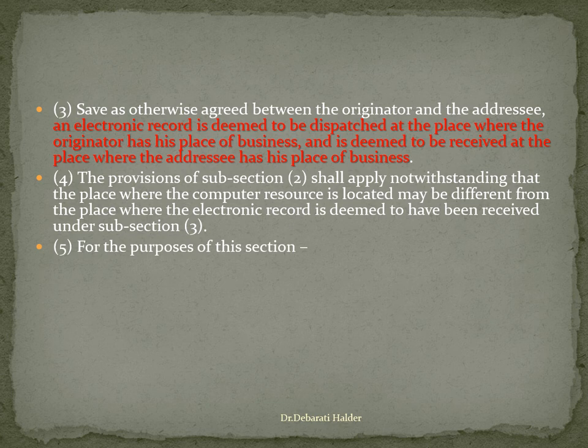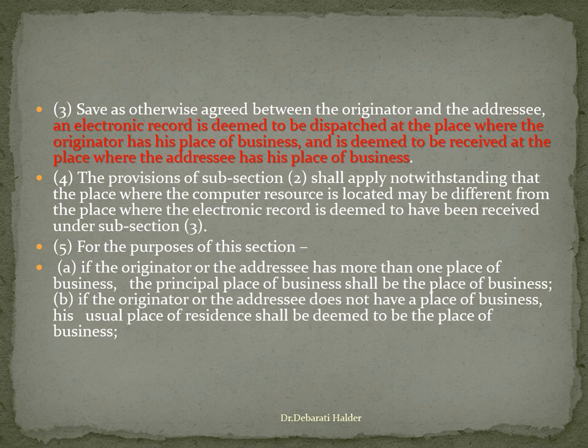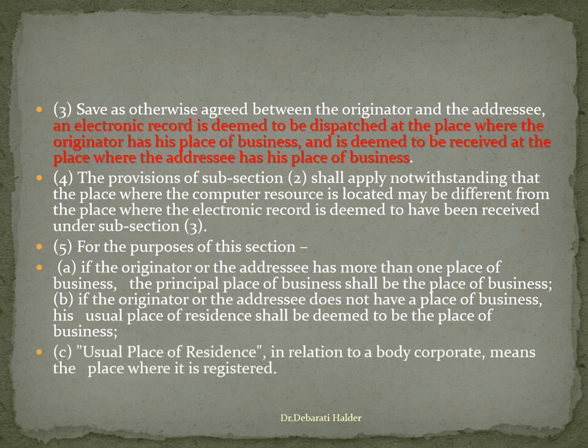For the purpose of this section, Section 13 further says, if the originator or the addressee has more than one place of business, the principal place of business shall be the place of business. If the originator or the addressee does not have a place of business, his usual place of residence shall be deemed to be the place of business. This is actually derived from the general contract laws. Subclause C says usual place of residence in relation to a body corporate, that means a company, means the place where it is registered.